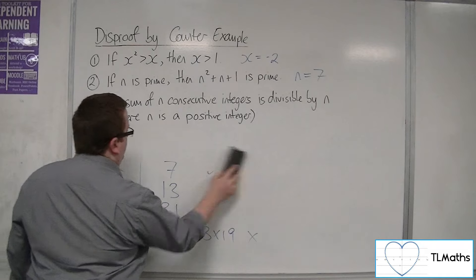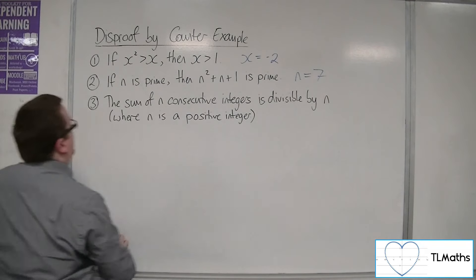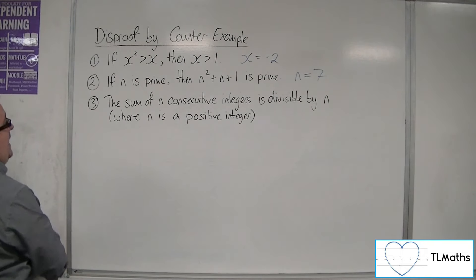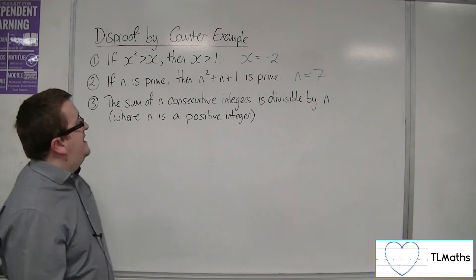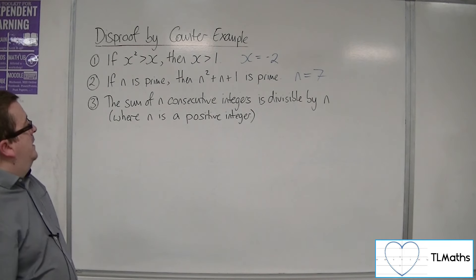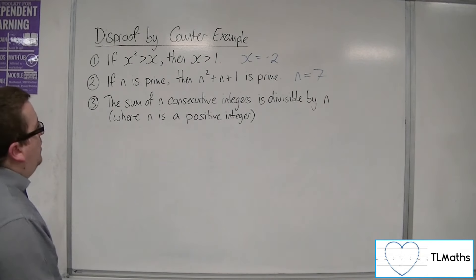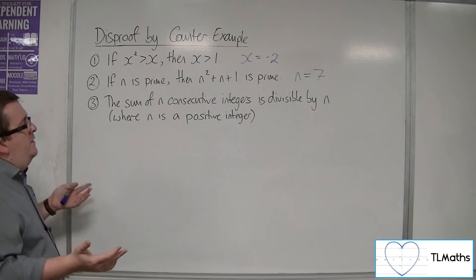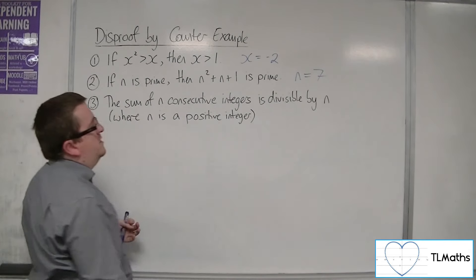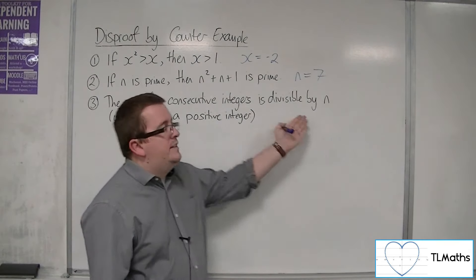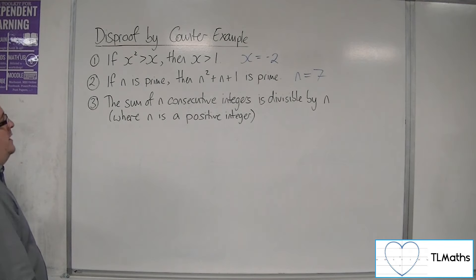So the last one says the sum of n consecutive integers is divisible by n, where n is a positive integer. So what does that mean? Well, if I have then 4 consecutive integers, we'd be saying that it is divisible by 4.